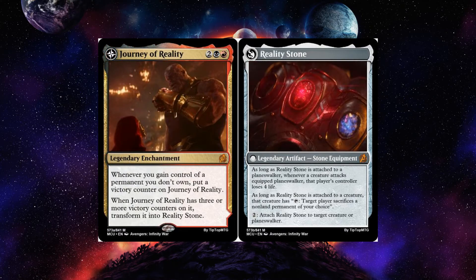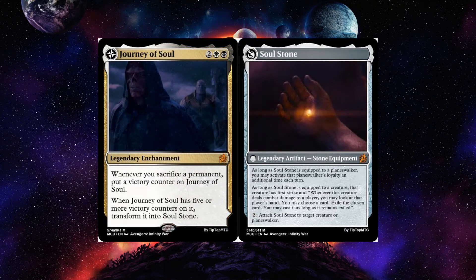Journey of Reality: whenever you gain control of a permanent you don't own — which is a Black-Red theme in the set — and if you do that three or more times, transform it. The Reality Stone attached to a planeswalker: whenever a creature attacks the equipped planeswalker, that player's controller loses four life, making it hard to attack. Attached to a creature: tap, target player sacrifices a non-land permanent of your choice — gets around hexproof and indestructible. Very powerful, and very hard to flip.